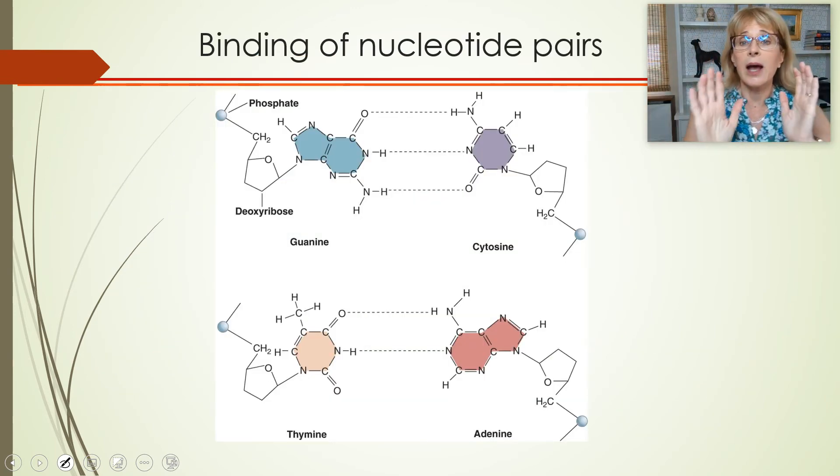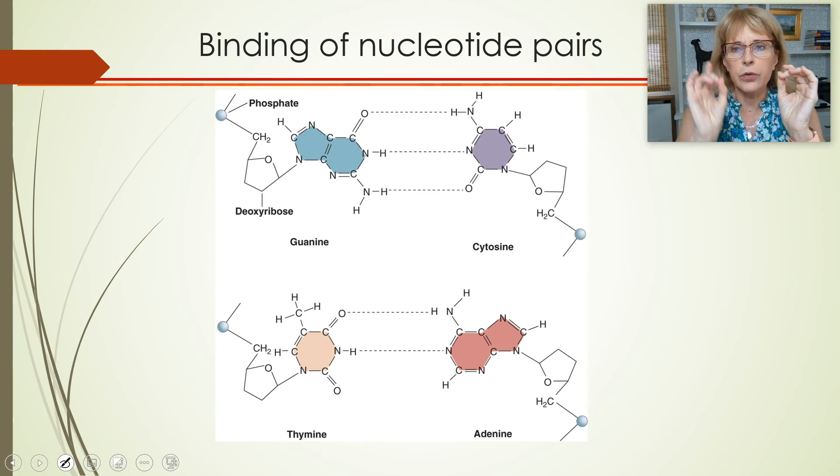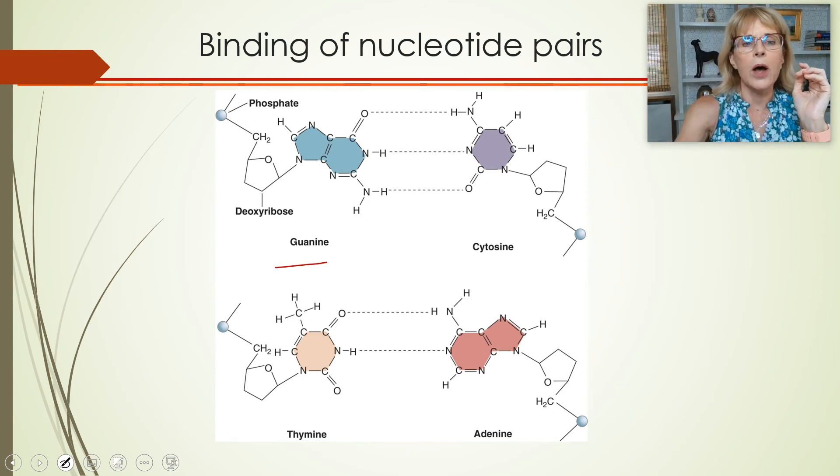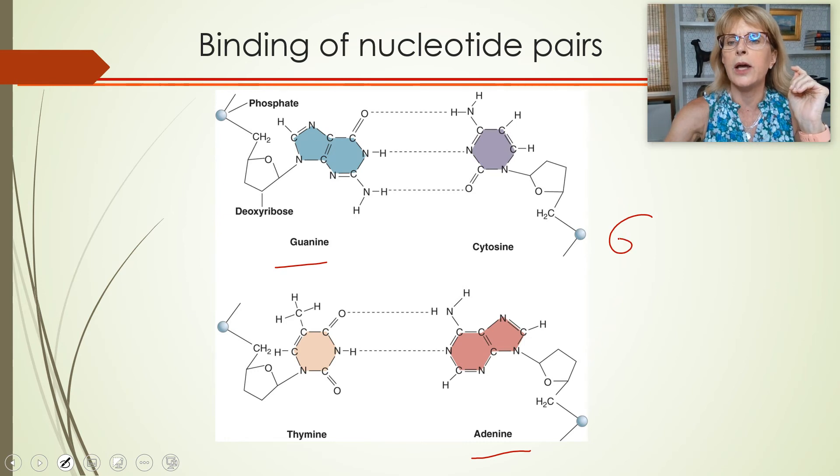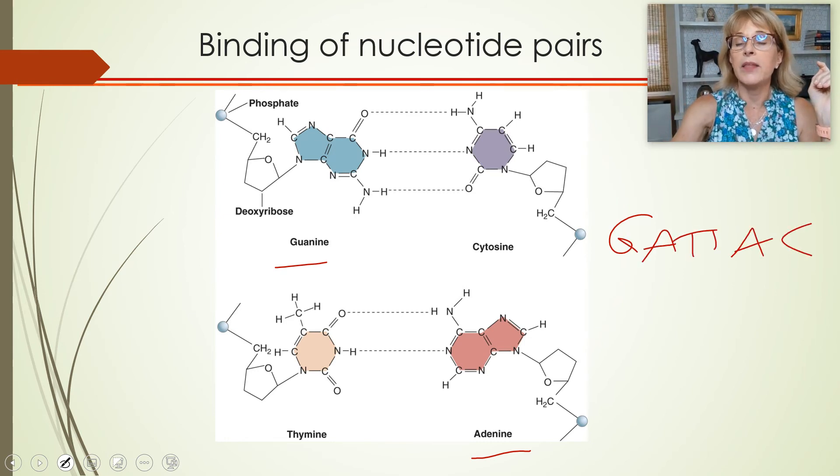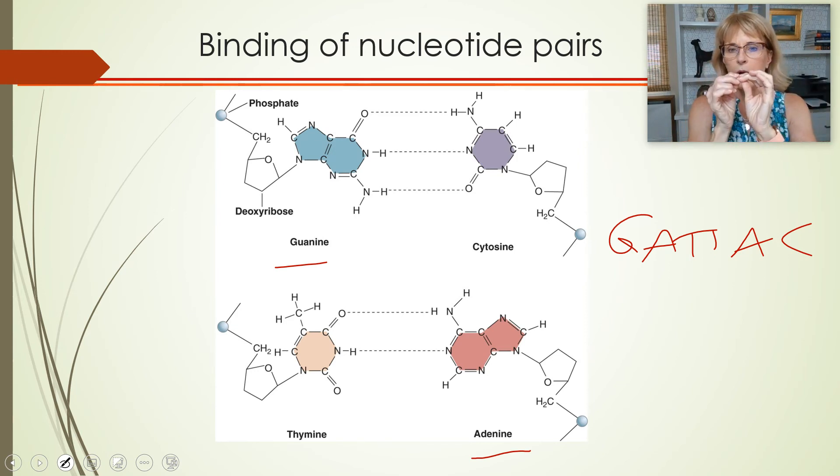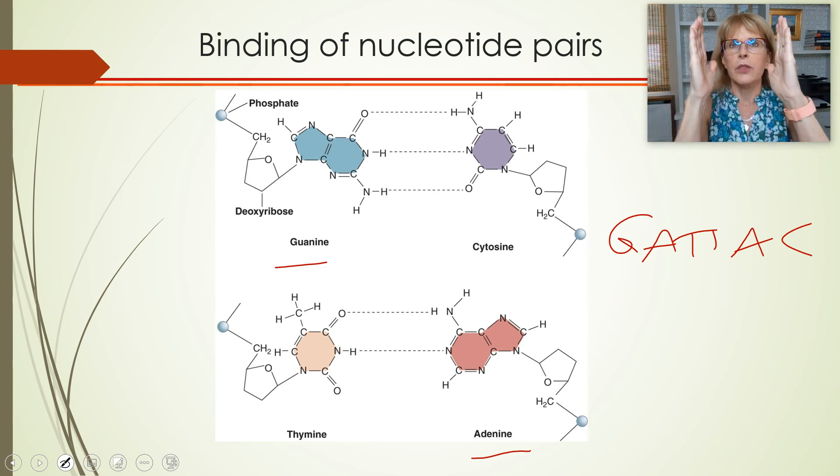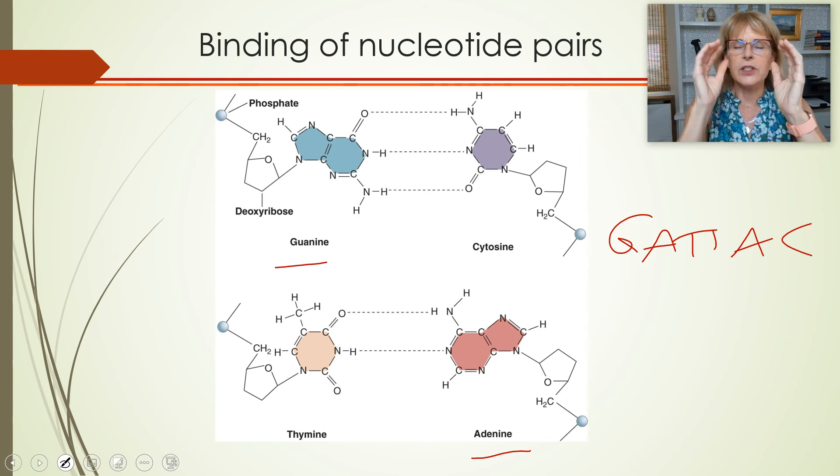If in a lab someone asks you about the binding rules or the rules of complementarity, they mean the cytosine always bonds with the guanine, and the thymine always bonds with the adenine. Then the two strands of DNA get twisted around. Now, here we can see how they fit. Two things. Remember that the guanine and the adenine, the first two letters of Gattaca, the guanine and the adenine, they're big. They're the purines. They're bigger. And the thymine and the cytosine, they're smaller.